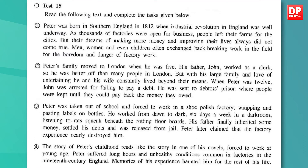When Peter was 12, John was arrested for failing to pay a debt and sent to debtor's prison. Peter was taken out of school and forced to work in a shoe polish factory, wrapping and pasting labels on bottles. He worked from dawn to dark, six days a week, in a dark room listening to rats squeak between the rotting floorboards. His father finally inherited some money, settled his debts, and was released from jail. Peter later claimed that the factory experience nearly destroyed him. Memories of his experience haunted him for the rest of his life.